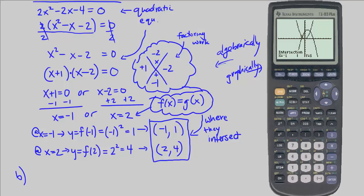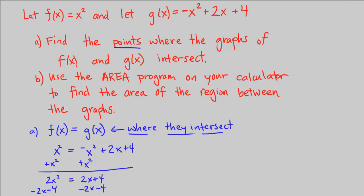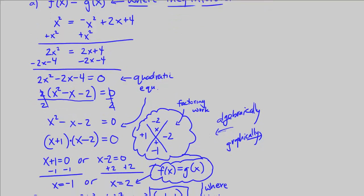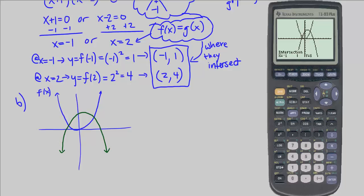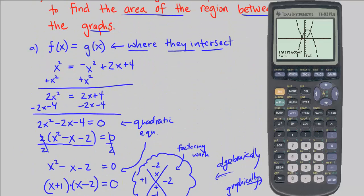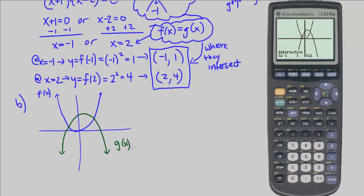That's part A. Part B says to use your calculator's area program to find the area of the region between the graphs. It even says think before you start pushing buttons. The thinking is to look at the two graphs: f of x is x squared, and g of x in green is negative x squared plus 2x plus 4. We're asked to find the area between them — the pink region.